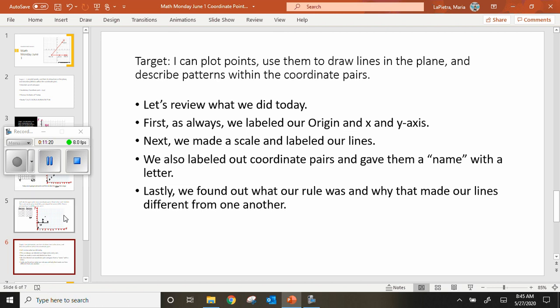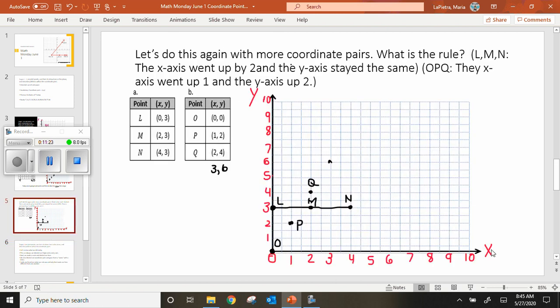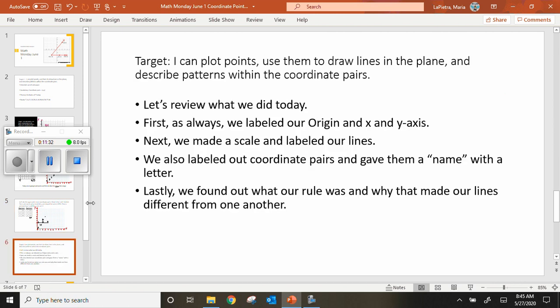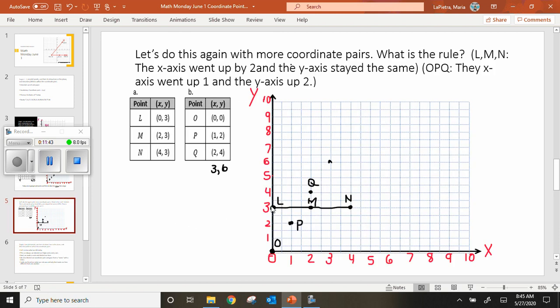Next, we make a scale. If you go back and look, here's our scale. We did one to ten for this side, and the Y axis, we did one to ten as well. We also labeled our coordinate pairs and gave them a name with a letter. Let's go back. We labeled, this is L. (0, 3) was L. (0, 0) was O. (1, 2) was P, and so on.